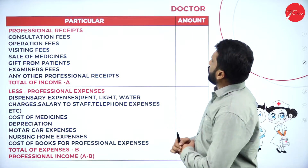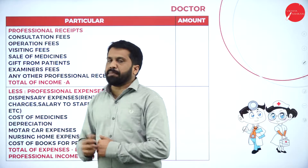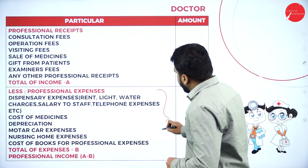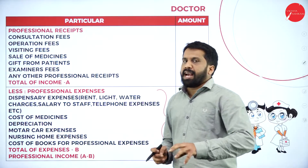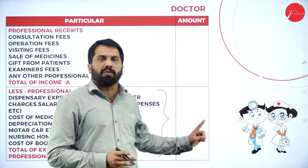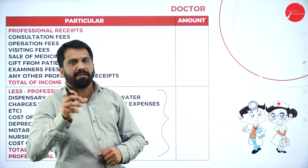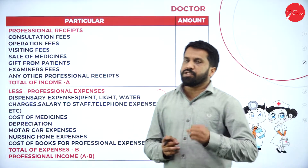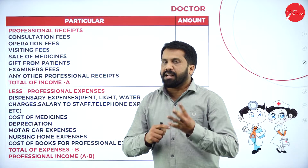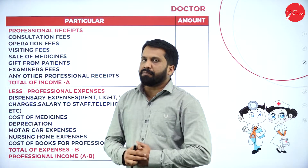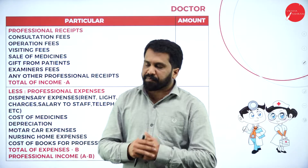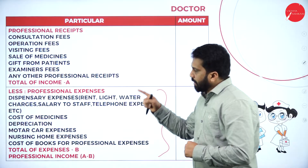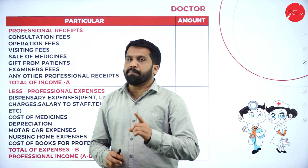We have professional receipt and professional payment. All the professional expenses have already been explained. If you have not seen the previous session, please go back to session 1, topic 5, where I explained what is business, what is profession, and we started with profession. Under profession for your syllabus you have 3: advocate, lawyer, doctor, as well as chartered accountant. We are done with the format of chartered accountant and the format of lawyer, and the last format is called your medical practitioner.